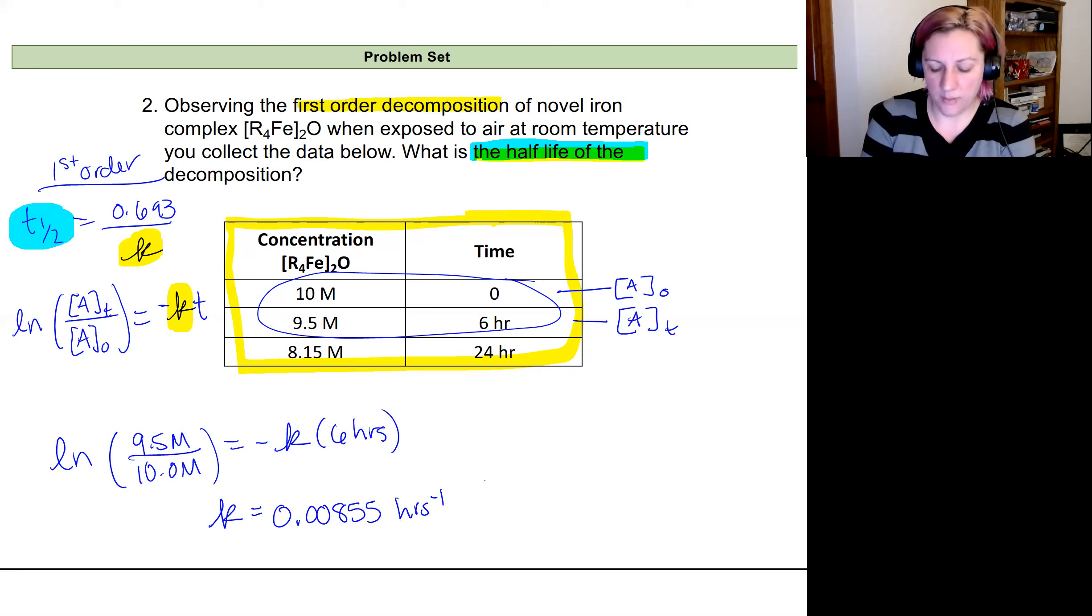All right. So now I'm going to plug that value into my T1 half, my half-life expression. So I'm just plugging that in where K would be. So that's 0.00855 inverse hours. And plugging this into my calculator, I get a half-life equal to 81.05 hours.